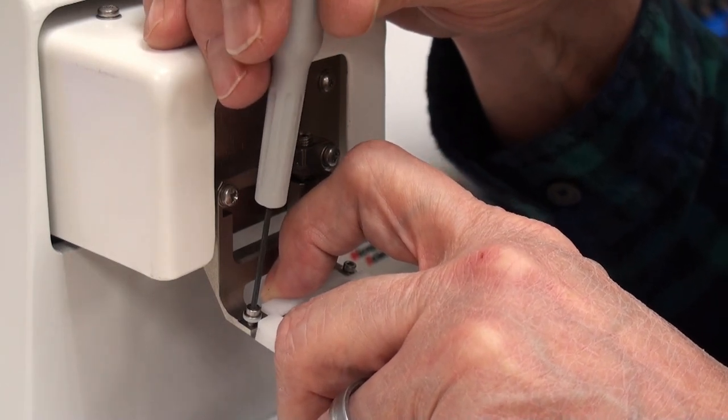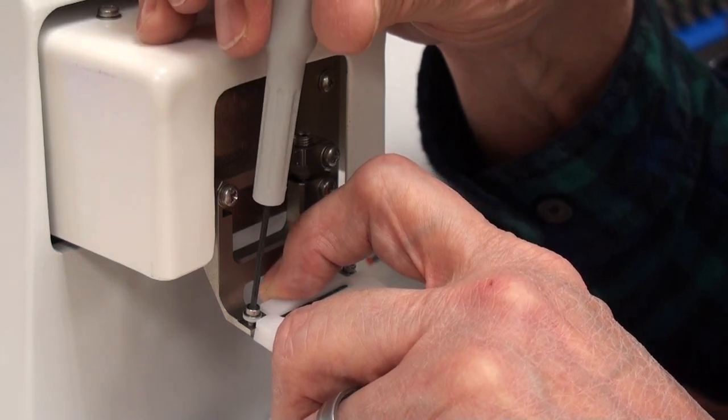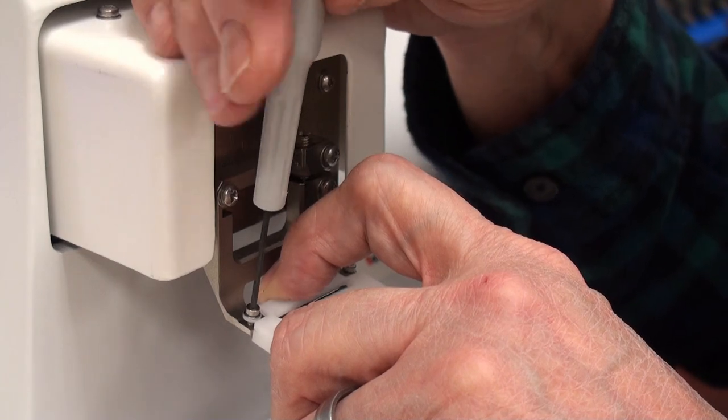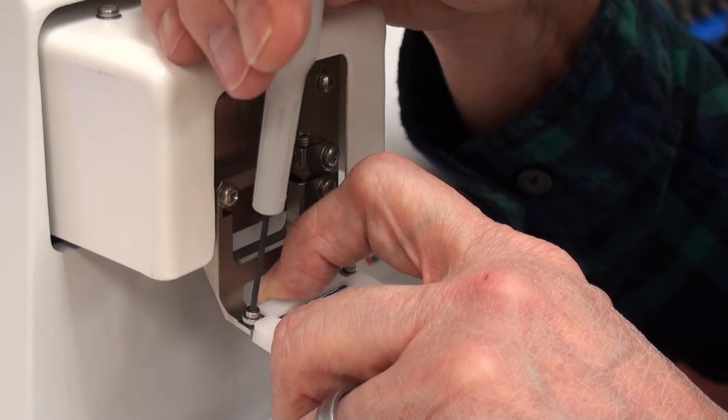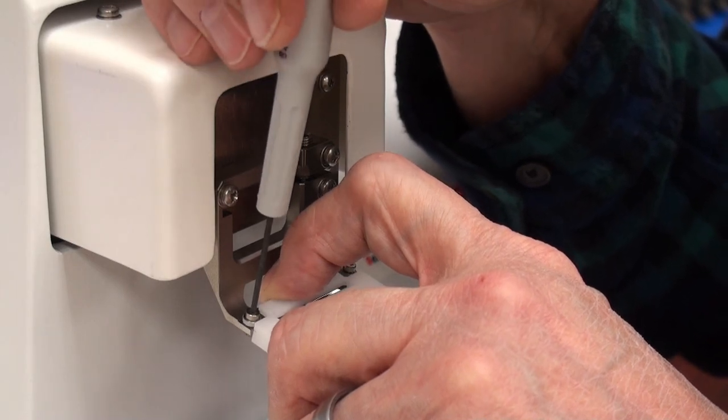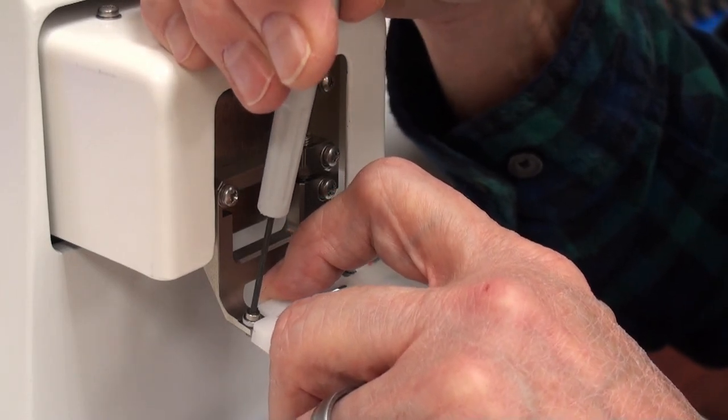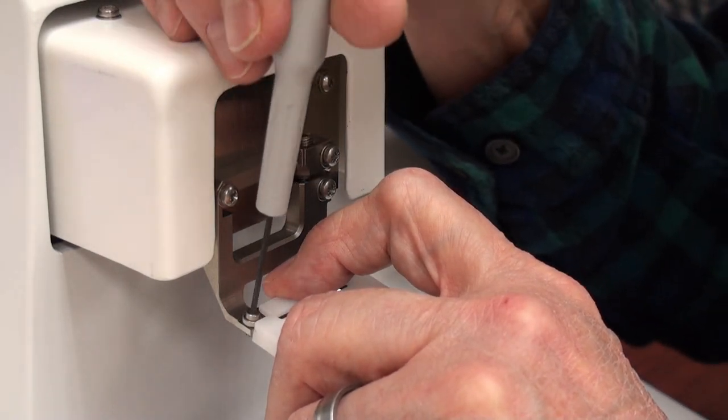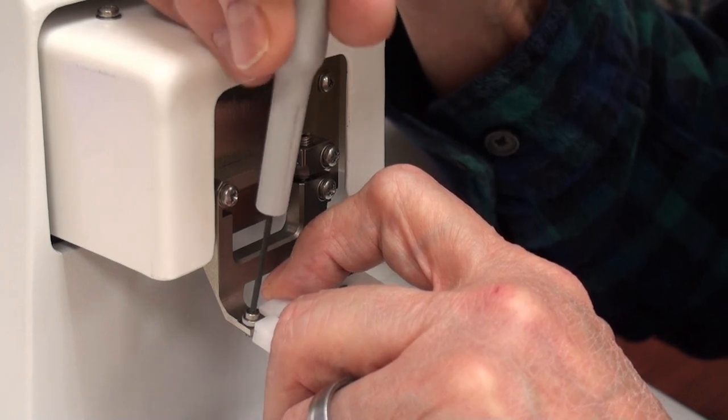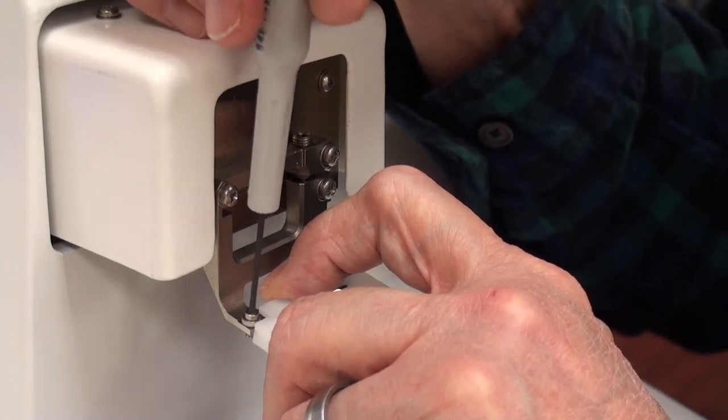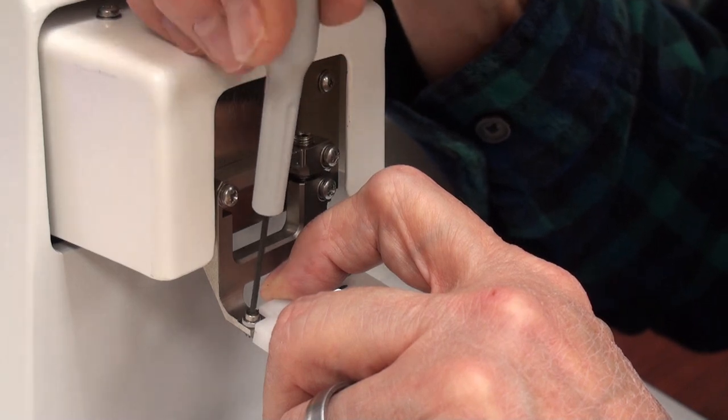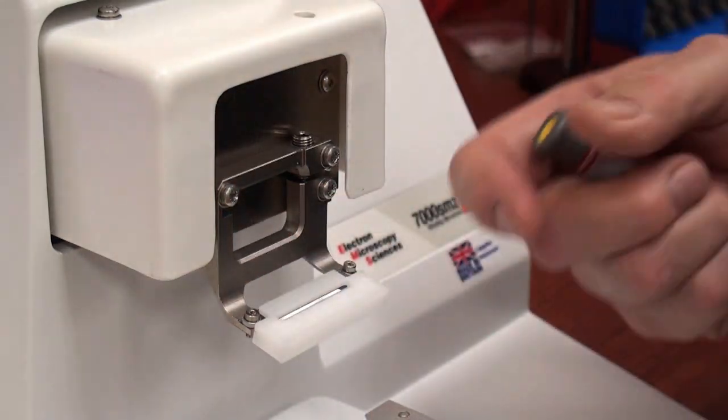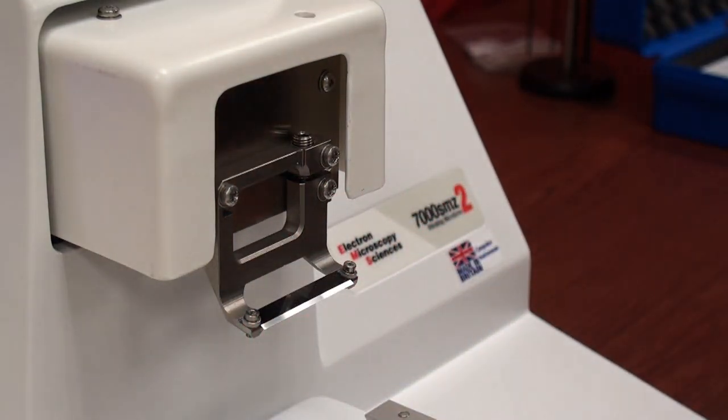You want to make sure that the blade is on the little shelf. There we go, it just dropped into place. So it's lefty-tighty on this one, righty-tighty on this one. And once the blade is mounted, you can remove the cover.